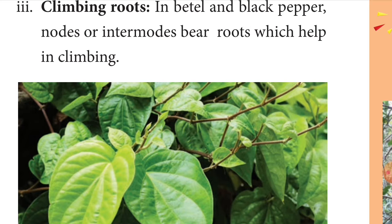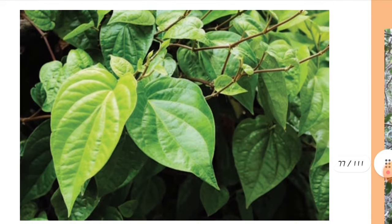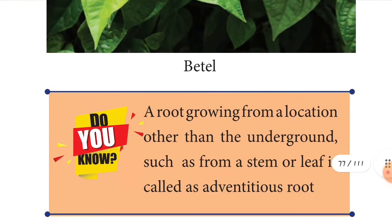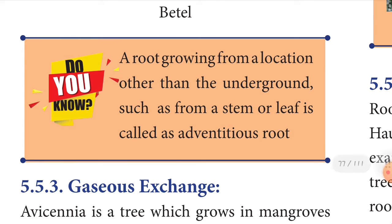See the betel leaves children — this is the best example of climbing roots. You can see the nodes and internodes where the roots help in climbing. A root growing from a location other than underground, such as from a stem or leaf, is called an adventitious root. Examples include stilt roots and sugarcane.